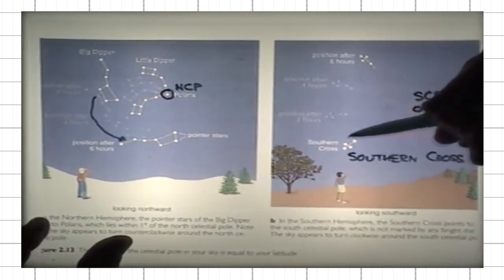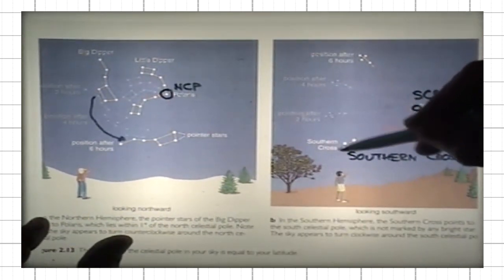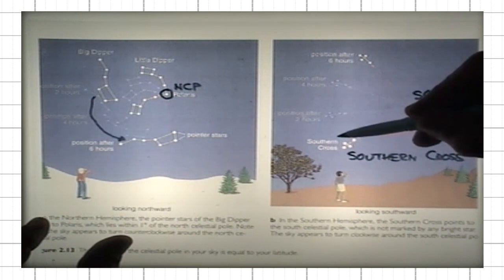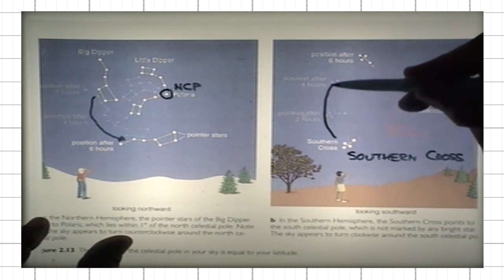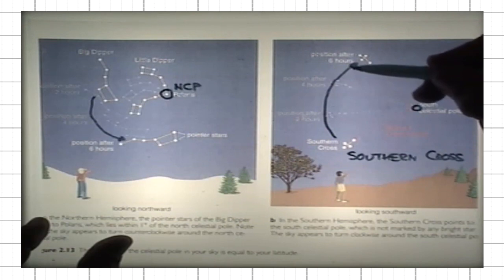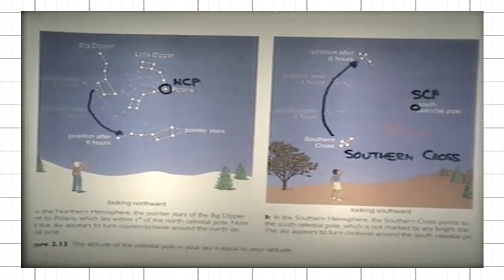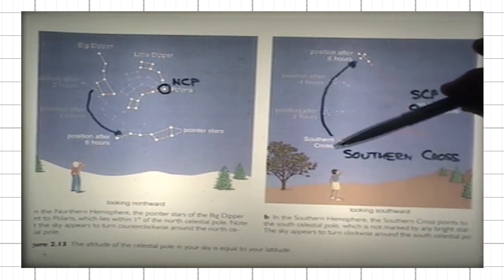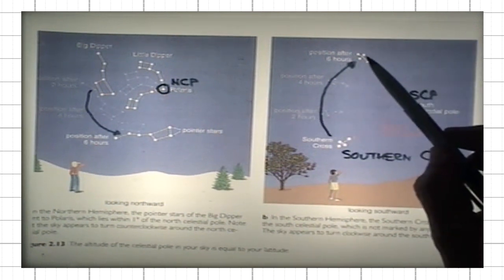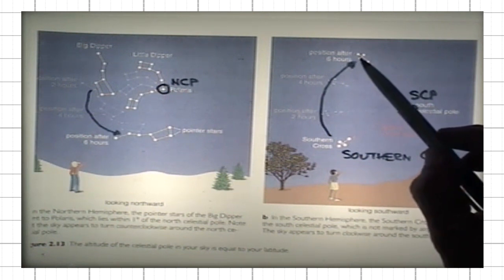In the southern hemisphere, you can see this is, say, a Southern Cross now. It's moving now clockwise, and in six hours, it would be located here. Again, in six hours, the angular displacement would be six times 15 degrees, 90 degrees.